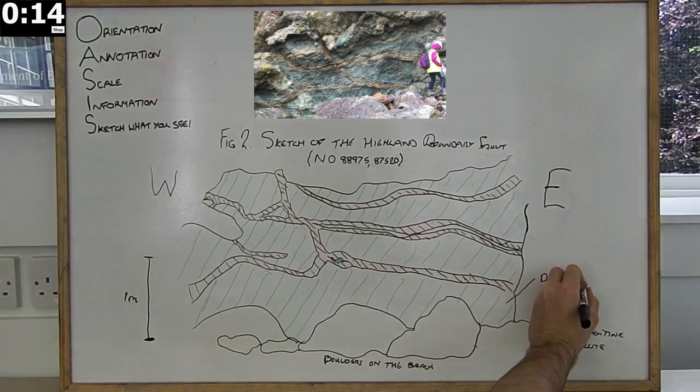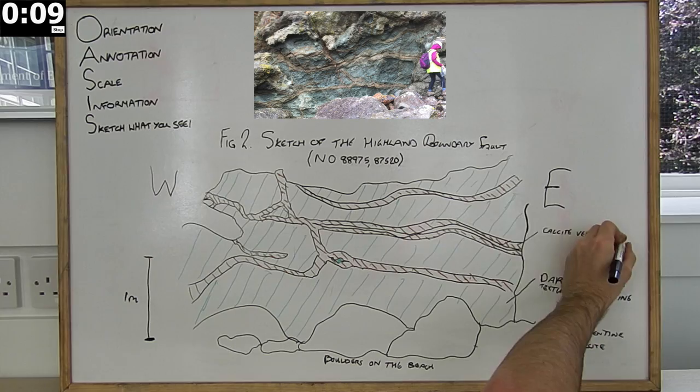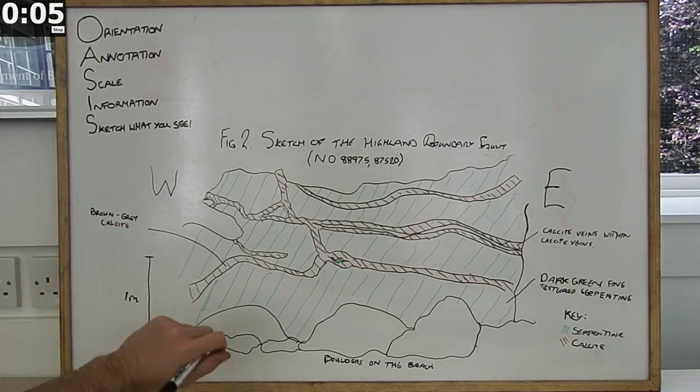After outlining the key features of what you are drawing, you should fill in the finer details and add annotations or a key. Annotations should be short, simple sentences describing what can be seen, for example a rock's colour and grain size.